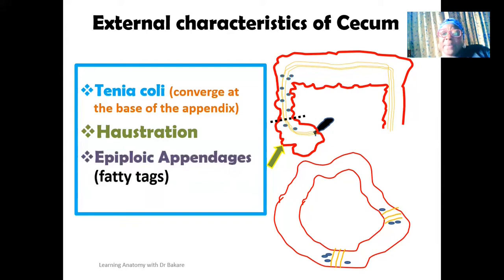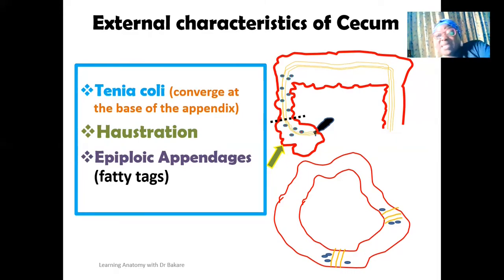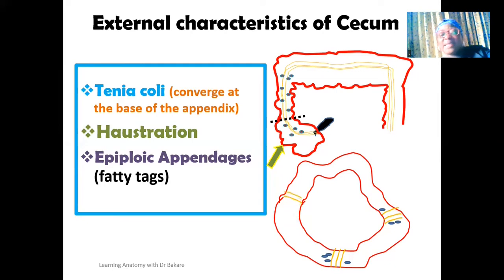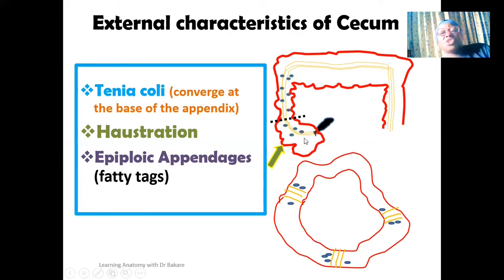The last structure is the epiploic appendages. Epiploic appendages are fatty tags, and they are located on both sides of the taenia coli. On both sides of the taenia coli, we have fat deposits called epiploic appendages. These are not just limited to the cecum but are also seen along other regions of the large intestine. They do not present any function but are just fat deposits on both sides of the taenia coli. In this cross-section image of the cecum, this highlighted in red is the wall of the cecum, and you see the taenia coli running through it, with epiploic appendages highlighted in blue on both sides.